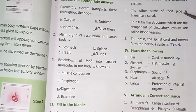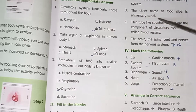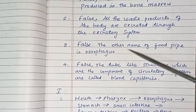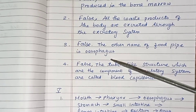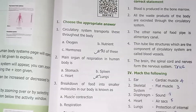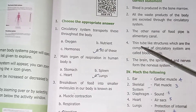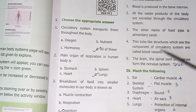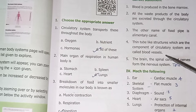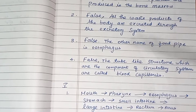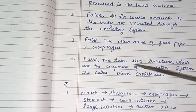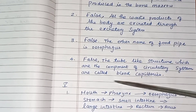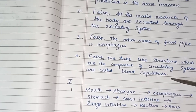The other name of the food pipe is the alimentary canal — False. The other name of the food pipe is the esophagus. Thin tube-like structures which are components of the circulatory system are called blood vessels — False. The tube-like structures which are components of the circulatory system are called blood capillaries.